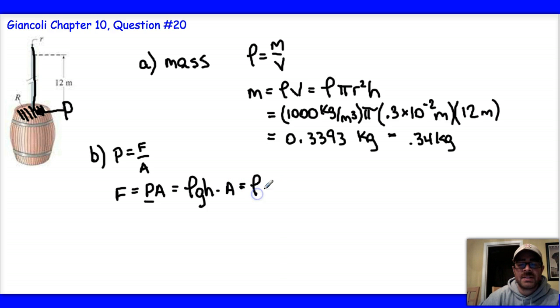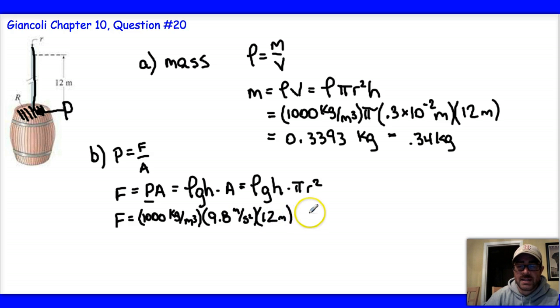I'll go ahead and expand that a bit further. I'm going to get the density times G times the height times pi R squared, the area of that circle, and I'll go ahead and substitute now. So I can say that the force on the underside of the barrel is going to be Rho, which is 1,000 kilograms per cubic meter for water, times the acceleration due to gravity, 9.8 meters per second squared. And I'm going to multiply that by my height of 12 meters. And then I need to multiply that by my area, which is going to be pi, times the radius, which is 21 centimeters, or 0.21 meters. And I need to be careful to square that.